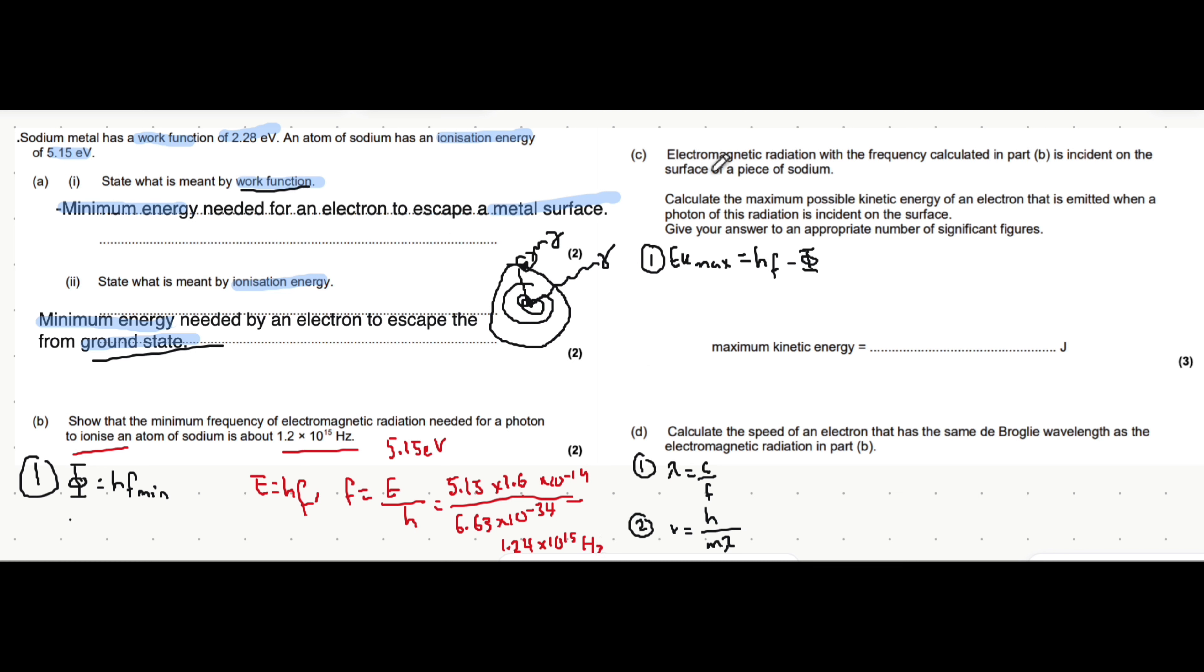Part c says this frequency is incident on the surface of sodium. Calculate the maximum possible kinetic energy of an electron that is emitted. That's why we use this equation here, known as the photoelectric equation. It's Planck's constant h, 6.63 times 10 to the minus 34, multiplied by the frequency 1.24 times 10 to the 15, minus the work function.